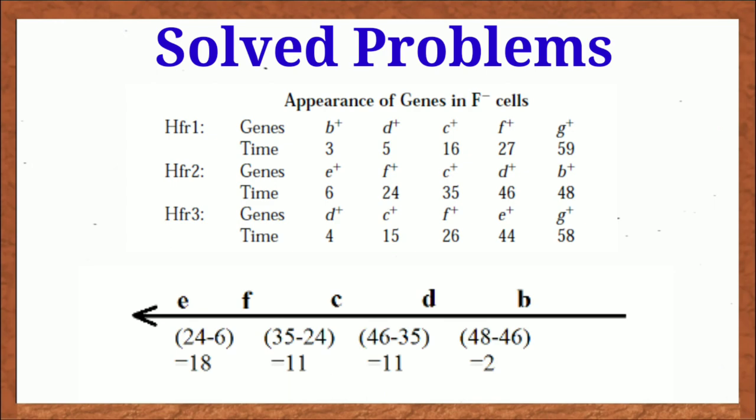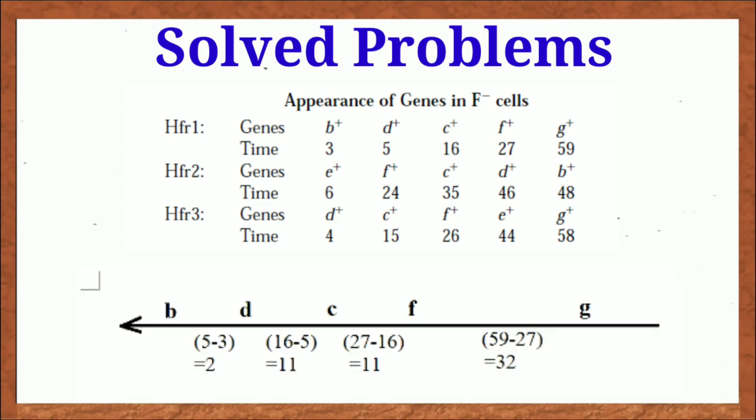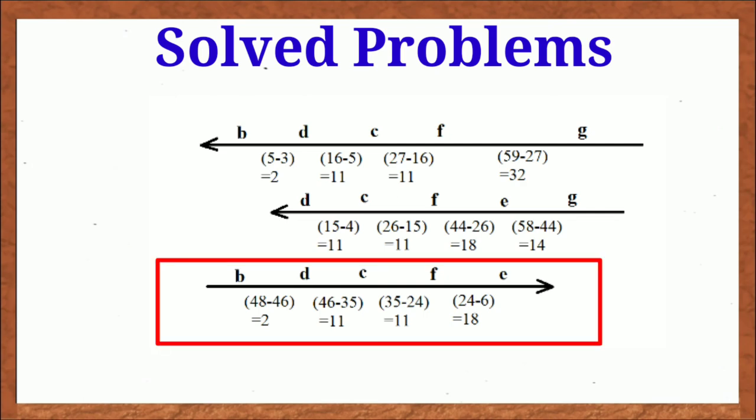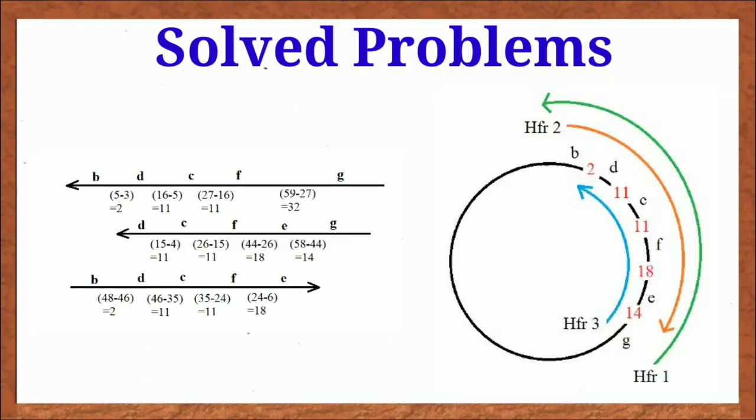Then like before, I have aligned them all and here I have to invert the sequence two or HFR2 in order to fit it. So the final map looks like this.